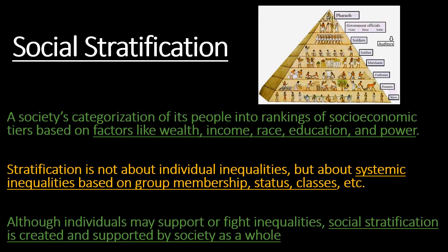One pretty glaring example is the stratification system in Egyptian society, where you can see the graphic on this slide with the Pharaoh on top and government officials below that, then soldiers, scribes, merchants, craftsmen, and peasants and slaves at the bottom. We're going to particularly focus on the US this week, and for chapter 10 we'll look at social stratification from a global perspective.